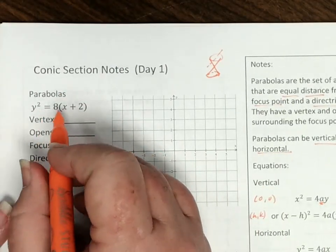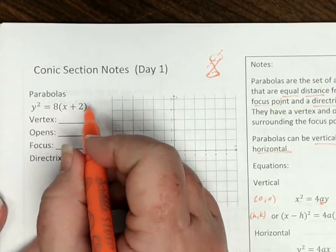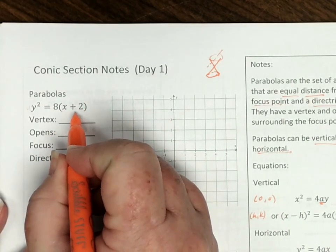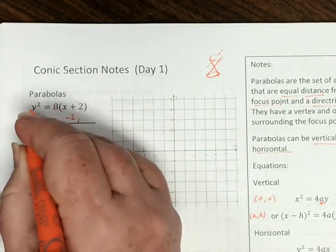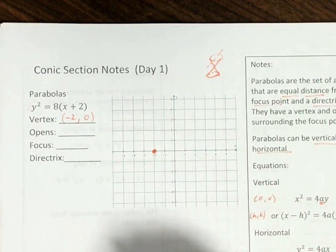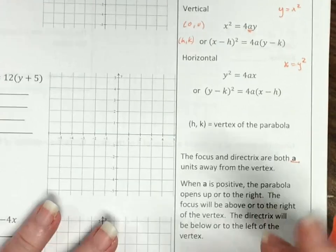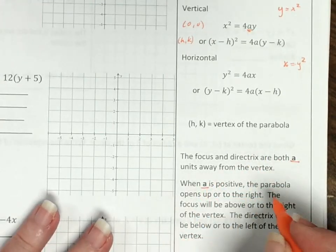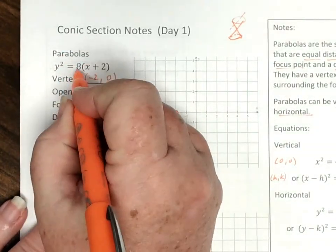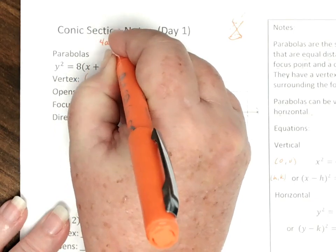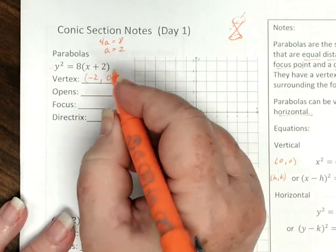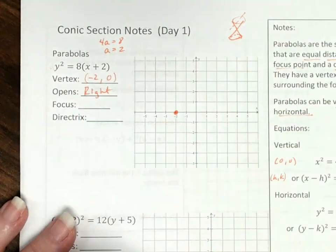For the first example, we have the equation y squared equals 8 times (x plus 2). This is a y-squared parabola, so it's horizontal. My vertex is at h equals negative 2, k equals 0 — so at (negative 2, 0). Since 4a equals 8, a equals 2, which is a positive value, so this parabola is going to open to the right.